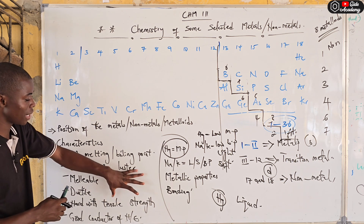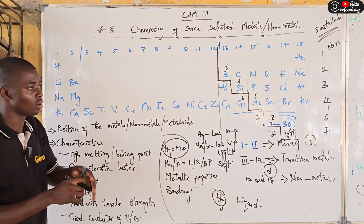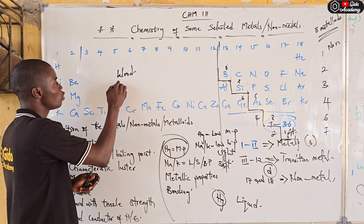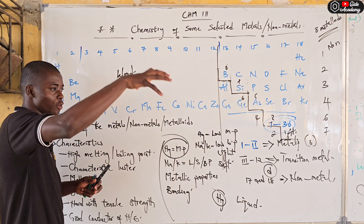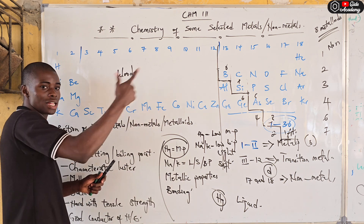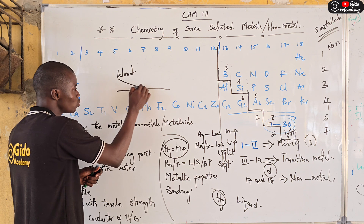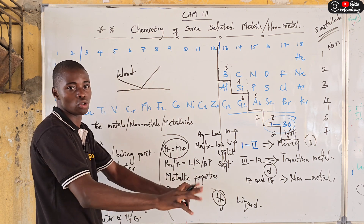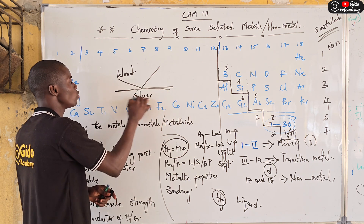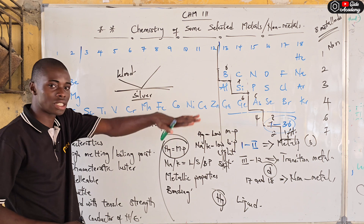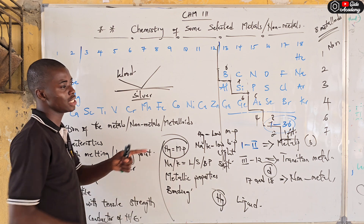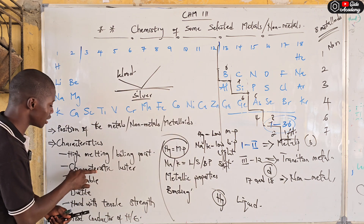Even though sodium and potassium are soft and light, they are still classified as metals. Another key characteristic of metals is that they have a lustrous appearance — they reflect light. If you point a torch at wood it just absorbs the light, but if you place silver or zinc in sunlight or point a torch at them, you will see the reflection of light on the other side. So all metals reflect light.